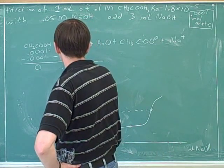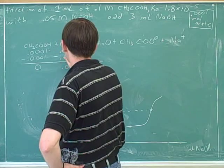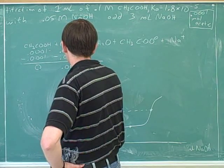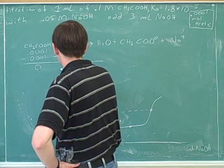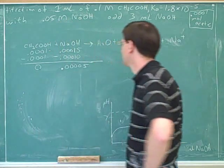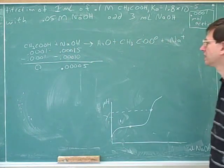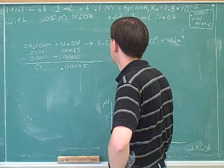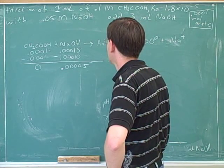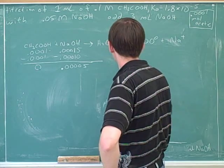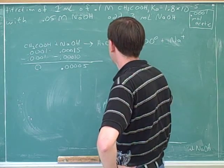So let's see. This is going to end up with 0.00015 minus 0.00010, which is 0.00005. This is what we have left over.